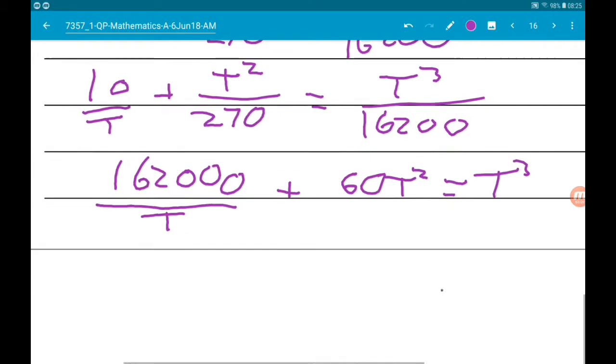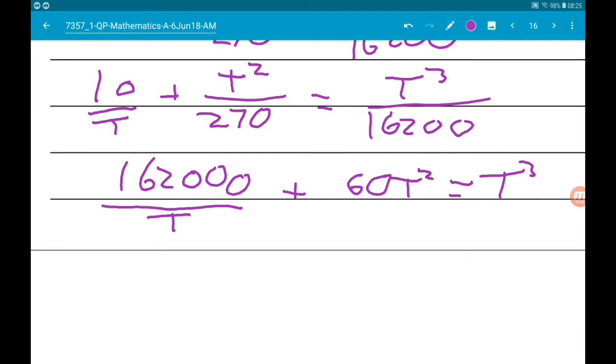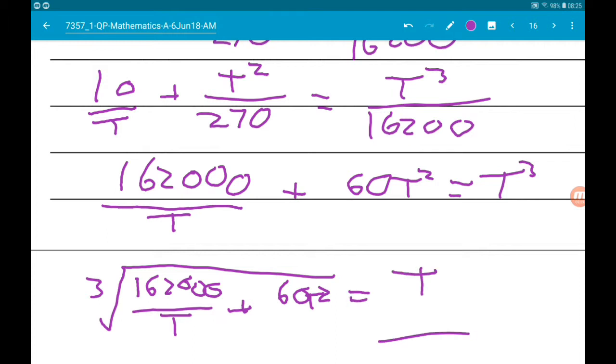Finally, cube root, and we get cube root of 162,000 over t plus 60t squared is equal to t. Done.